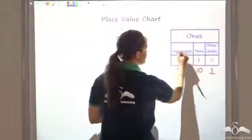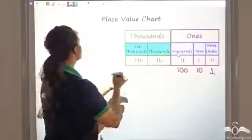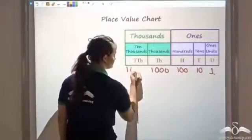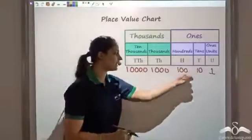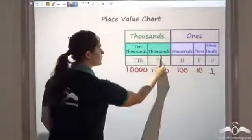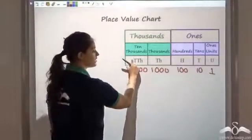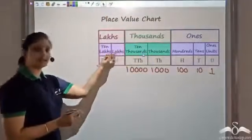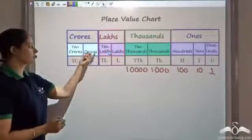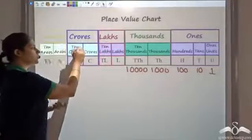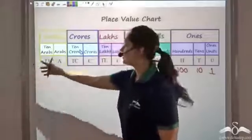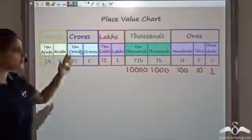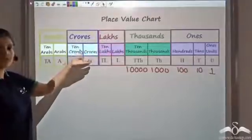After hundreds you have thousands, and 10 thousands. Each column is 10 times the previous. After thousands we move to lakhs, then 10 lakhs. After lakhs we have crores, then 10 crores. After crores we have Arabs. We can keep moving forward, but the named places go from ones to thousands to lakhs to crores to Arabs.